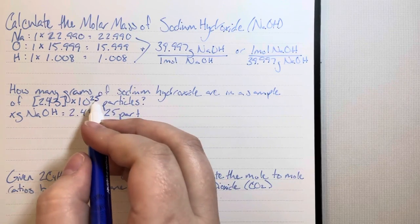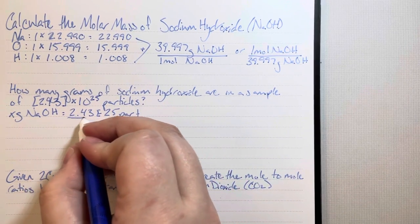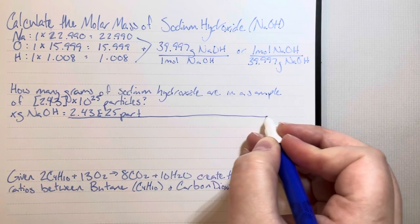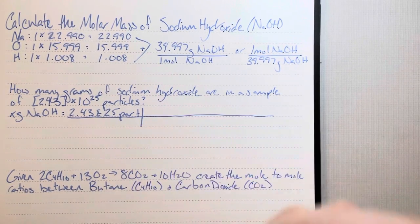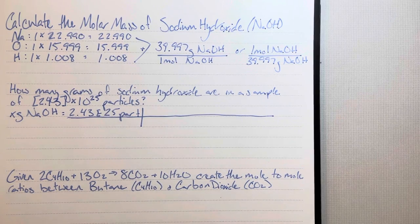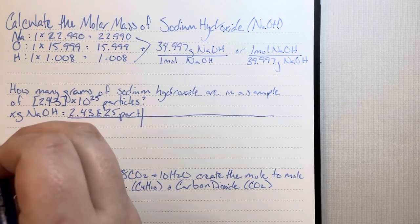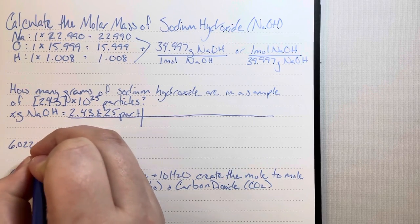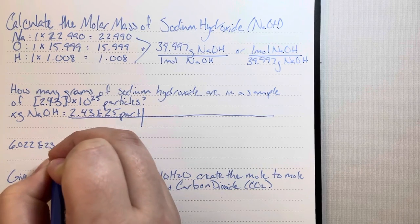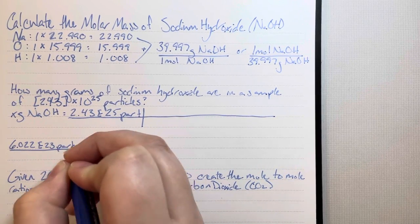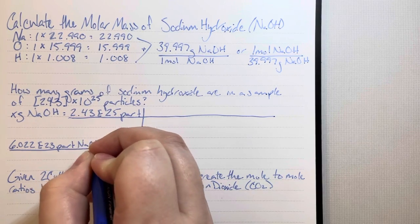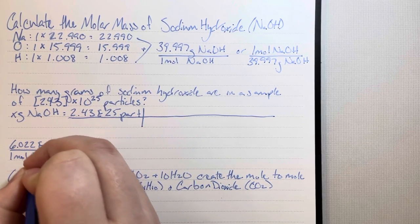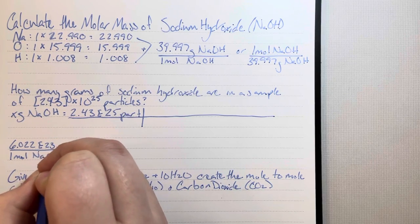The E takes the place of the times 10 and the caret. Currently I'm in particles, and the only conversion factor that contains particles is Avogadro's number. I'll create the conversion factor using Avogadro's number: 6.022E23 particles of sodium hydroxide for one mole of sodium hydroxide. And I'll flip that.